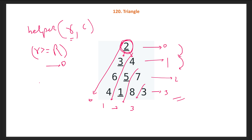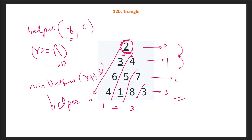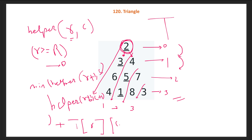Otherwise, we need to go in the minimum direction — whichever path gives us the minimum. So we take the min of either helper(r+1, c) or helper(r+1, c+1), and add the value at the current cell t[r][c]. We keep calling recursively until we hit the base case. Once the base case is hit, all the recursion call stack will fold up and we get the answer.